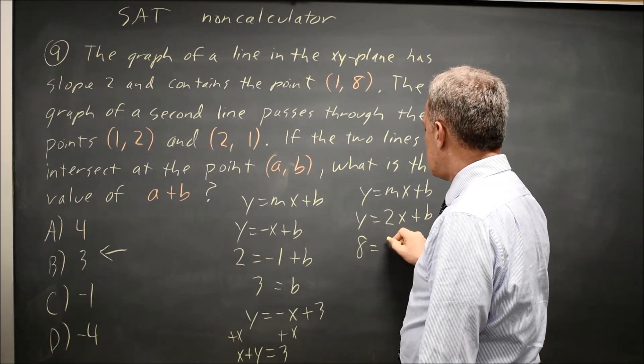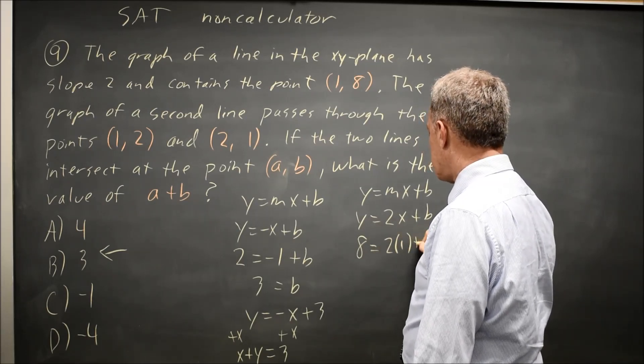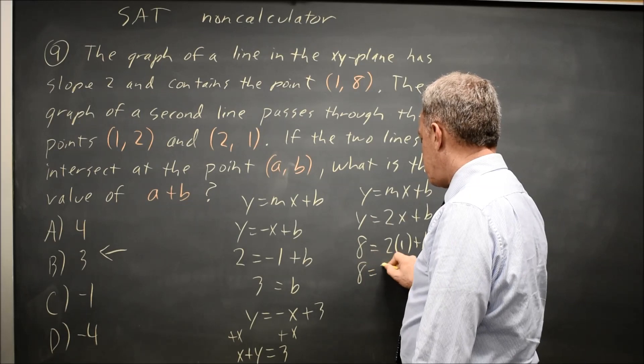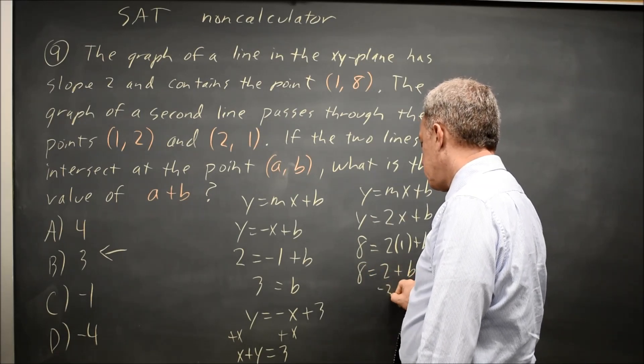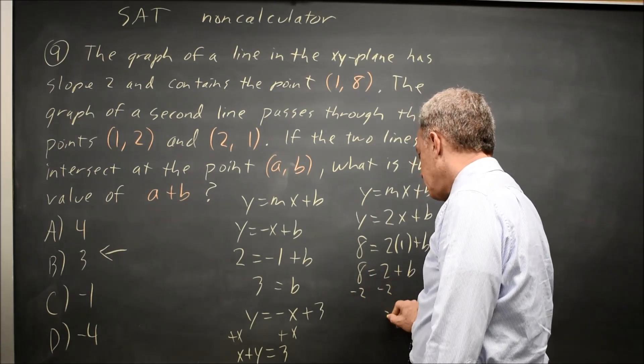The y value is 8, and the x value is 1. So 8 equals 2 plus b. Subtract 2 from both sides, and b equals 6.